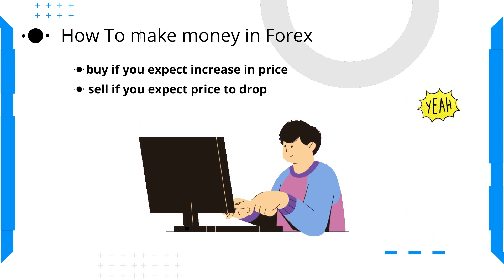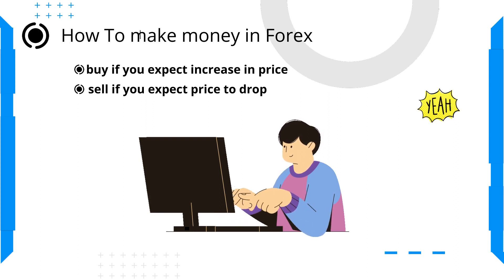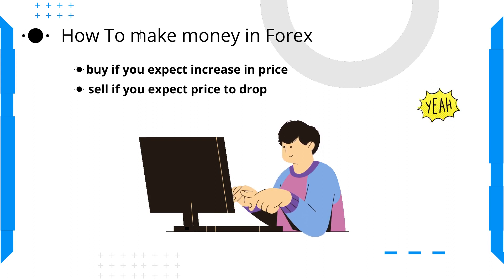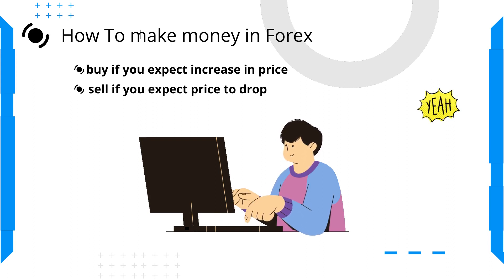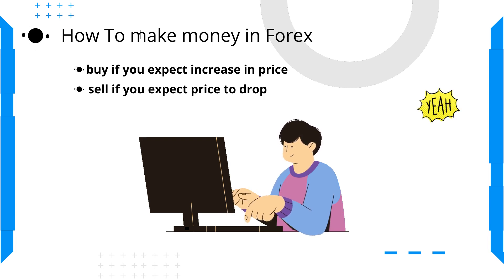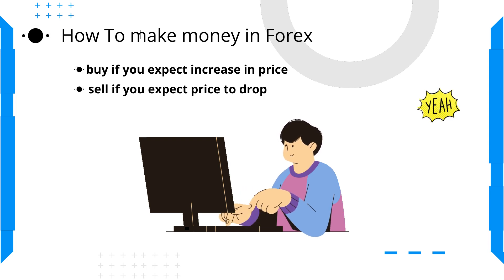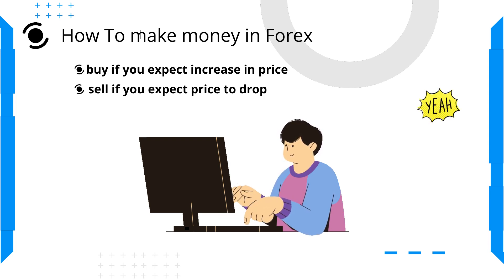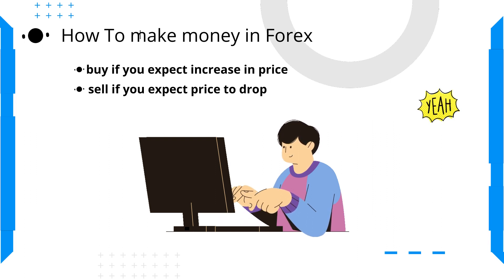How does one make money trading the forex market? It boils down to two simple things: to buy when you expect price to increase, and to sell when you expect price to drop. It is as simple as predicting where the price will move next. You simply need to identify where price will move and then place your buy or sell order.